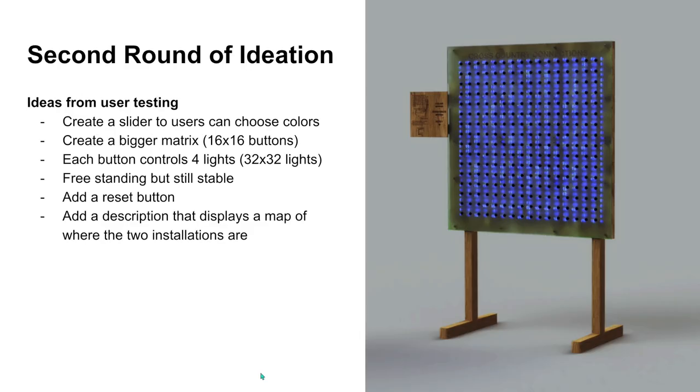After creating our first prototype, Jennifer created a 3D render of our second prototype. Here we added more features such as a color slider that changes the color of the lights, a reset button to clear the whole board, stable legs to support the freestanding larger matrix, and a side panel that includes information about our project and the location of these two installations. This round of iteration focuses on making the experience more delightful for the user as well as reduce any confusion.